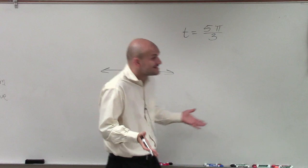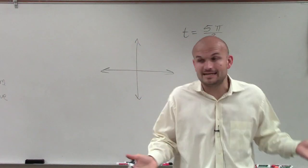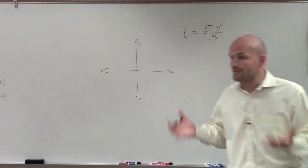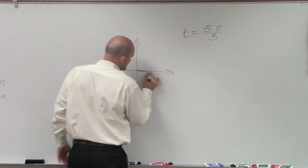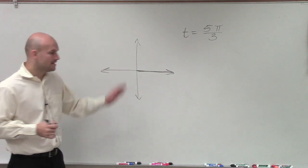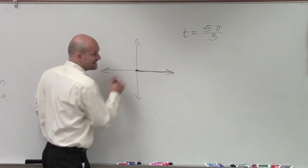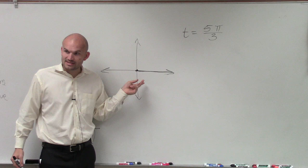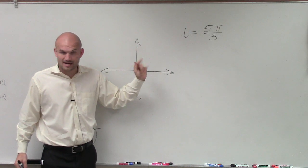First thing we need to know is what exactly is an angle. What is this t equals 5 pi over 3? Well, remember, when we're doing an angle, an angle has two sides. We have our initial side, which is going to be on the x-axis. Then we're going to rotate a secondary ray off of our vertex from there, and that's going to be called our terminal side.